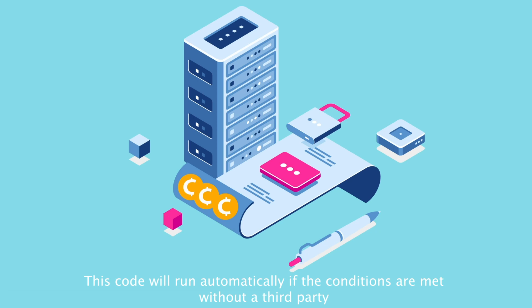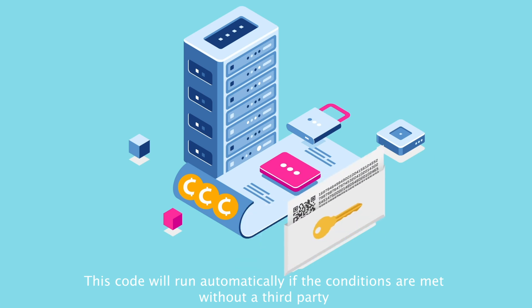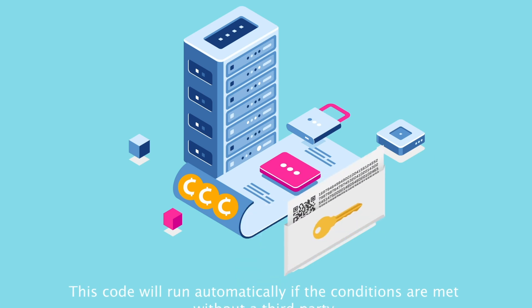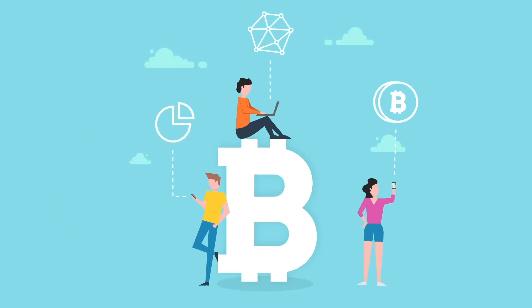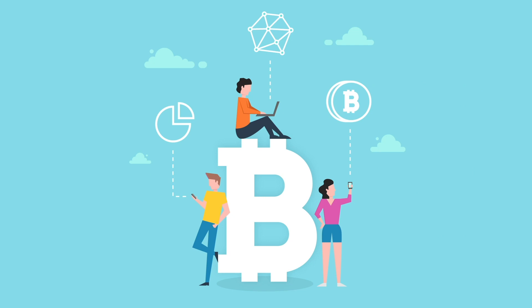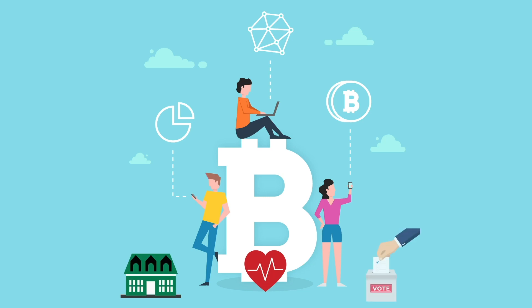In these contracts, the code is law, so the established agreement will be done no matter what. The idea of transparency and peer-to-peer network control is easier to understand in a financial situation, but it can be used for other transactions in other sectors, such as health, property, or vote.